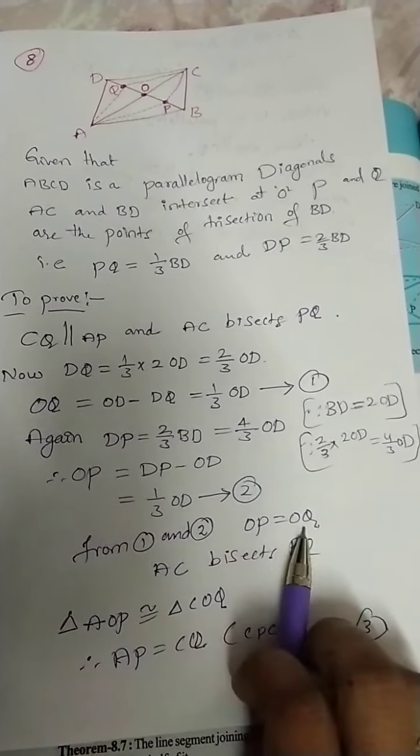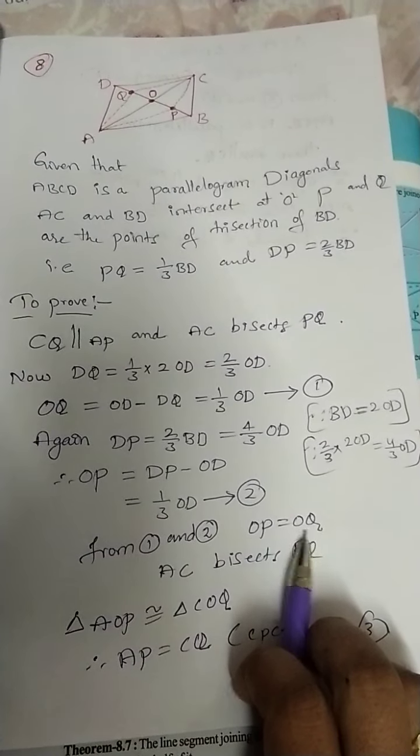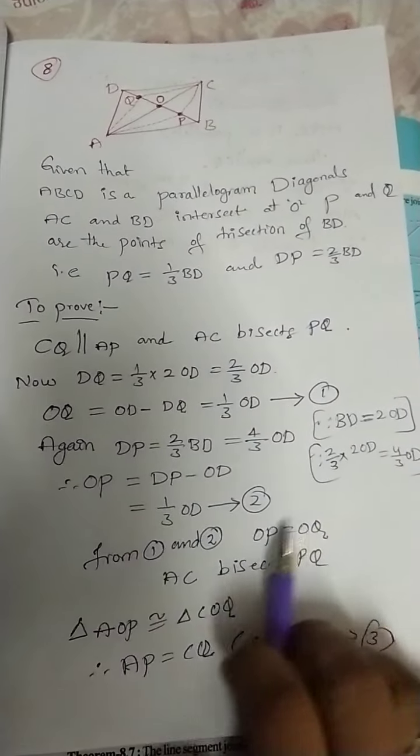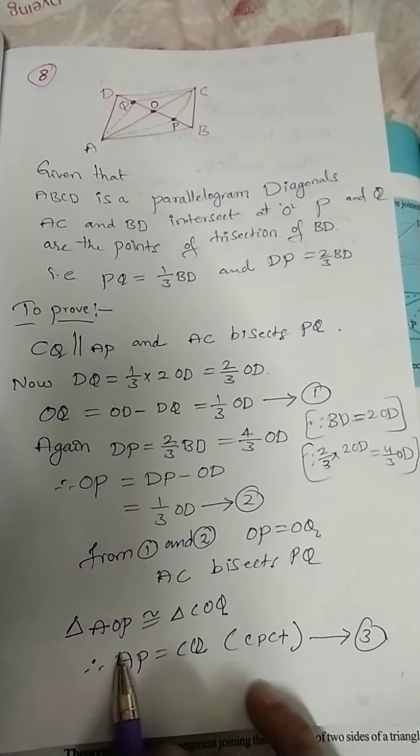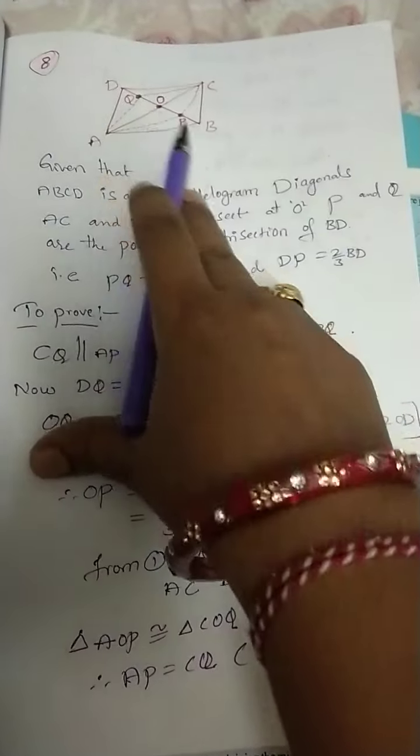Now, from equation 2, OP equals OQ. Now, AC bisects PQ. Triangle AOP, triangle AOP.